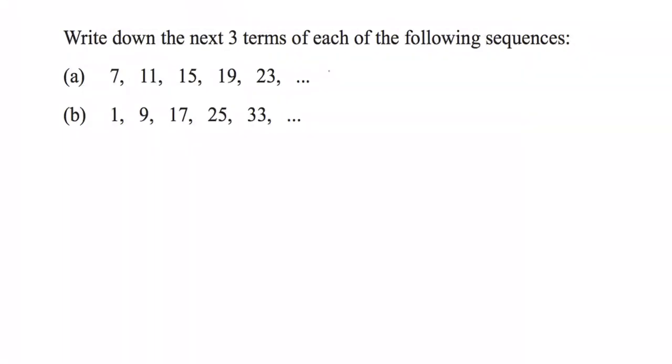So for A, the next one is going to be 27. Then we're going to have 31, and then we're going to have 35. I'm doing this by adding four every time, just like I've seen in the previous terms.